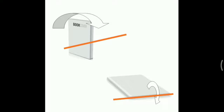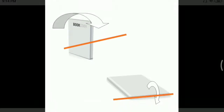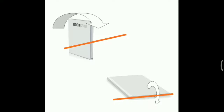Hold the bottom end of the book with your left hand and the top end with your right hand. Now try to bend the book using the right hand as shown by the arrow in the direction shown in the figure. You must understand what you are trying to do: you are trying to bend the book about an axis, and that axis is represented using an orange line here. You feel a particular amount of resistance being provided by the book against bending.